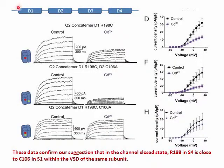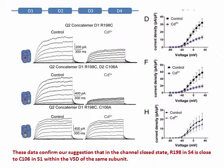Using a concatenated tetrameric KCNQ2 channel, we determined whether cadmium coordination between R198C and C106 occurs within the same monomer or between two adjacent subunits. Our data confirm that in the channel closed state, residue R198 in S4 is close to C106 in S1 within the voltage sensor domain of the same subunit.